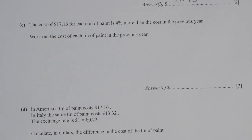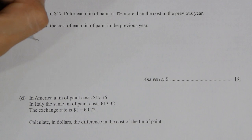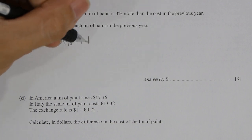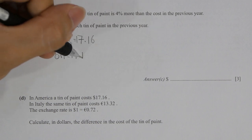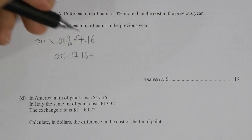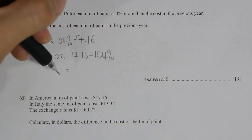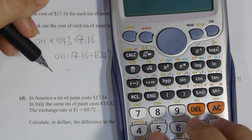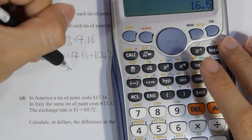We're back for part three. Each paint is 4 percent more than the cost of the previous year, so the previous year's price multiplied by 104 percent equals 17.16. By running the calculation, you get the result as 16.50.